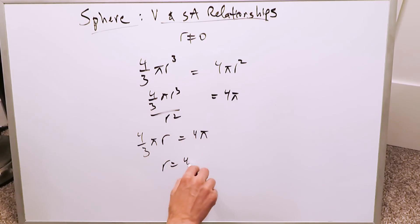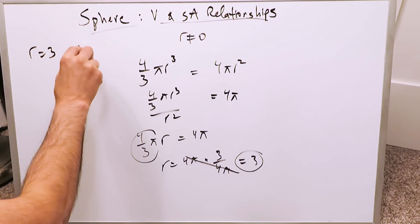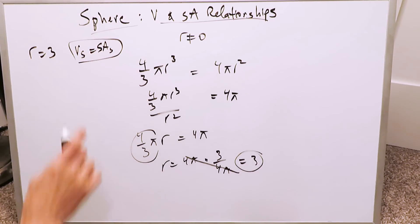Now solve for the r. r is equal to 4π times—take this on the other side—you'll have 3/4π and this will cancel out. You'll have 3. So what are we seeing here? For the radius of 3, the volume of a sphere will always equal the surface area of the sphere, and that's the first relationship we have deciphered.